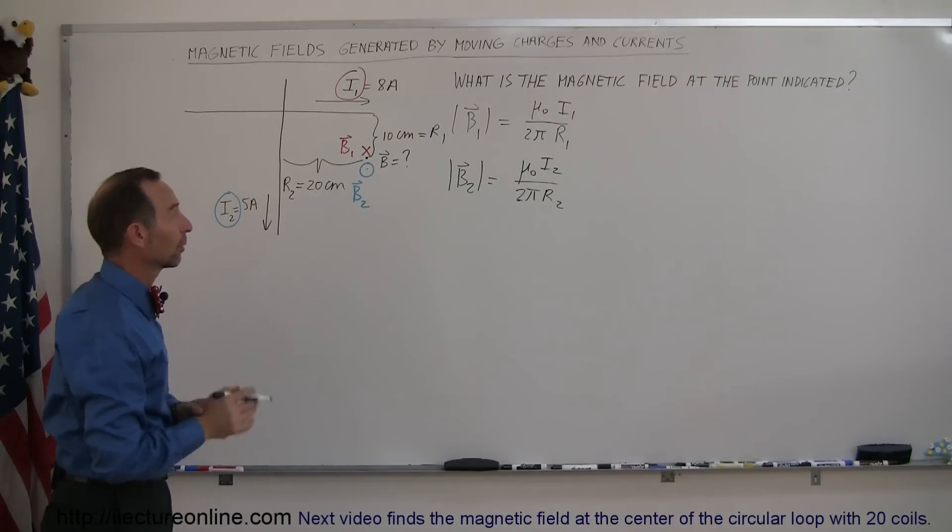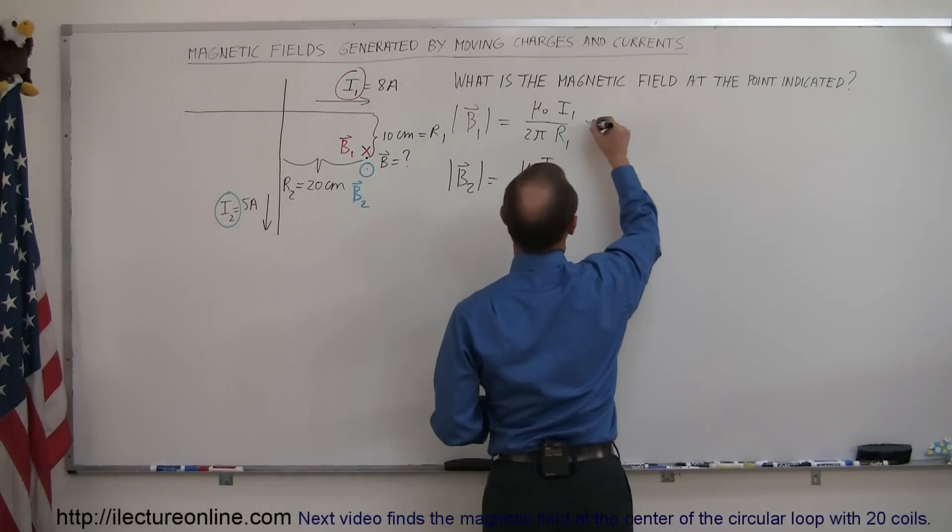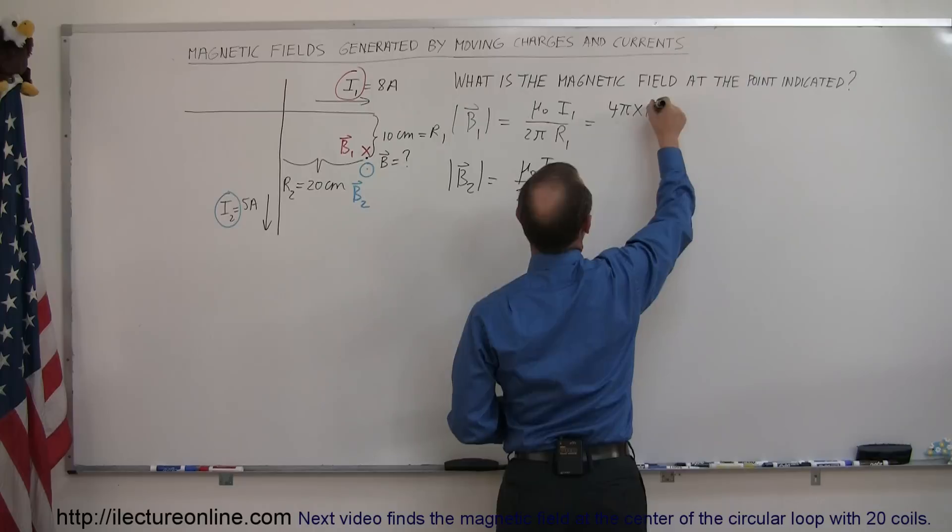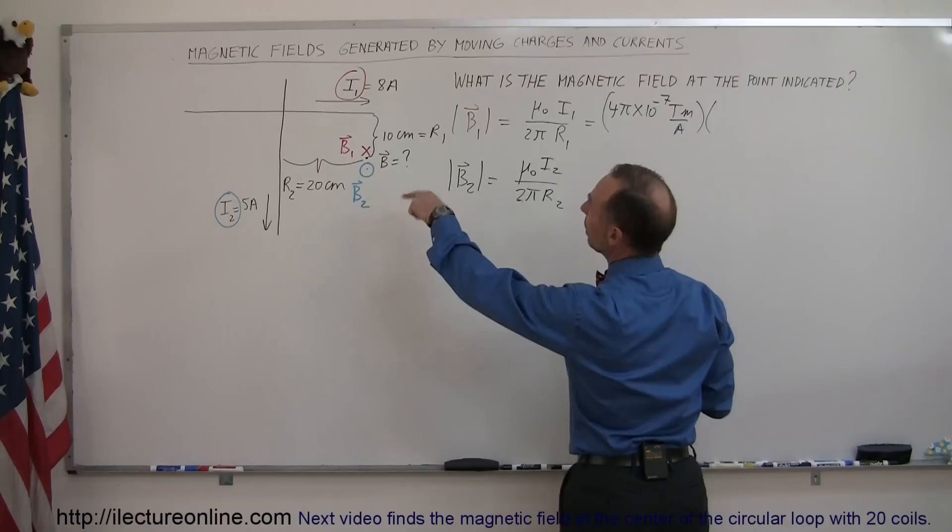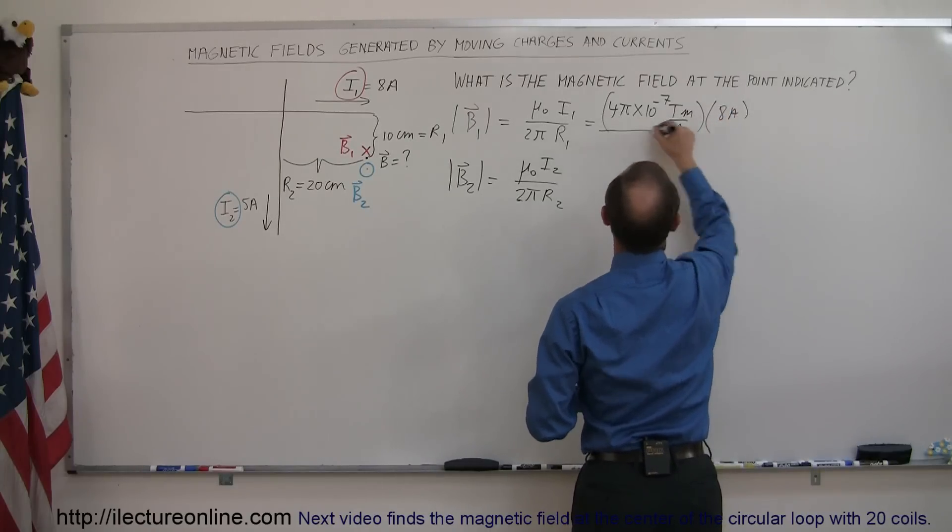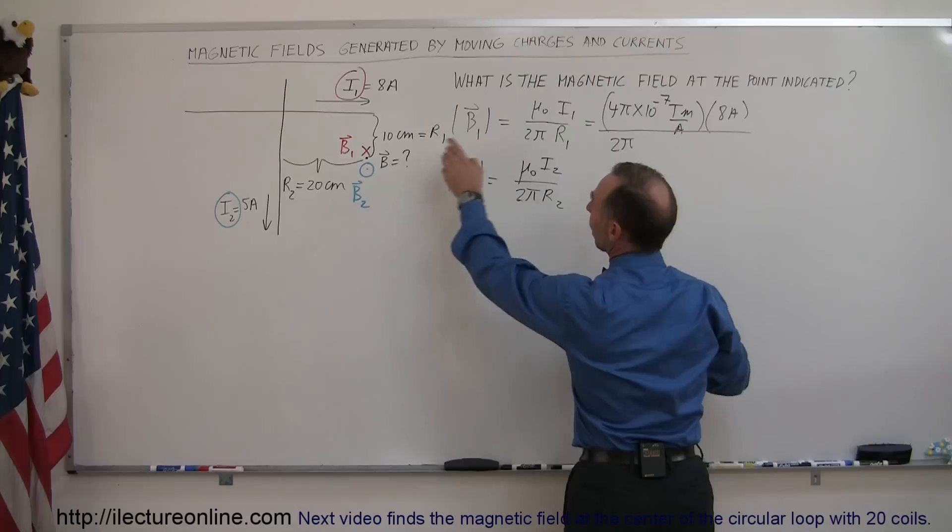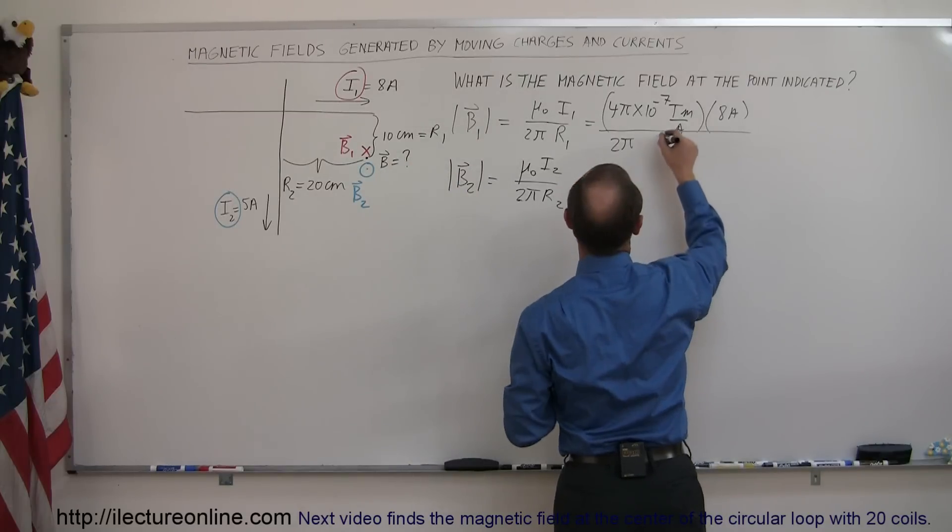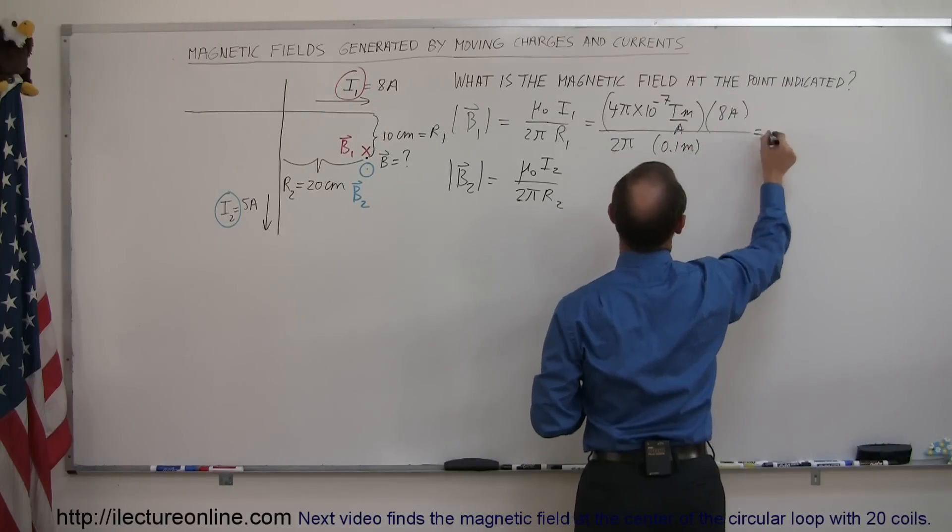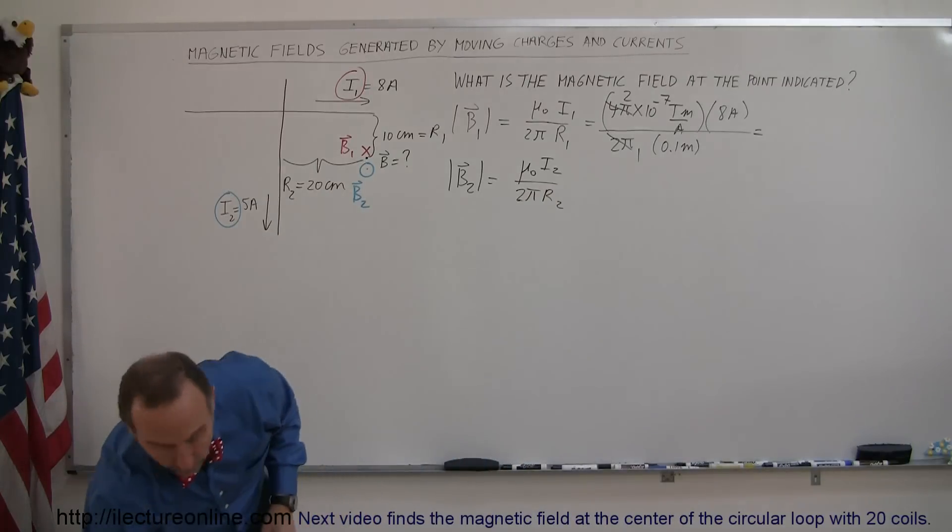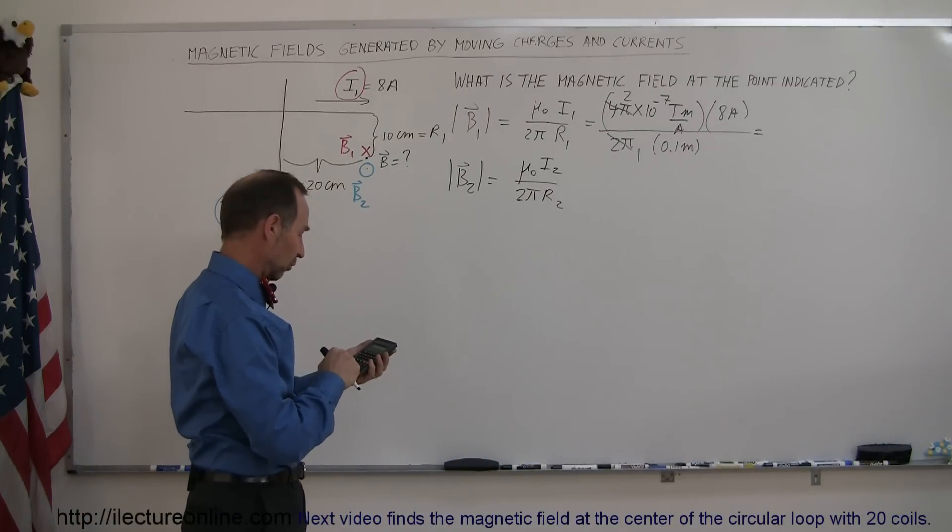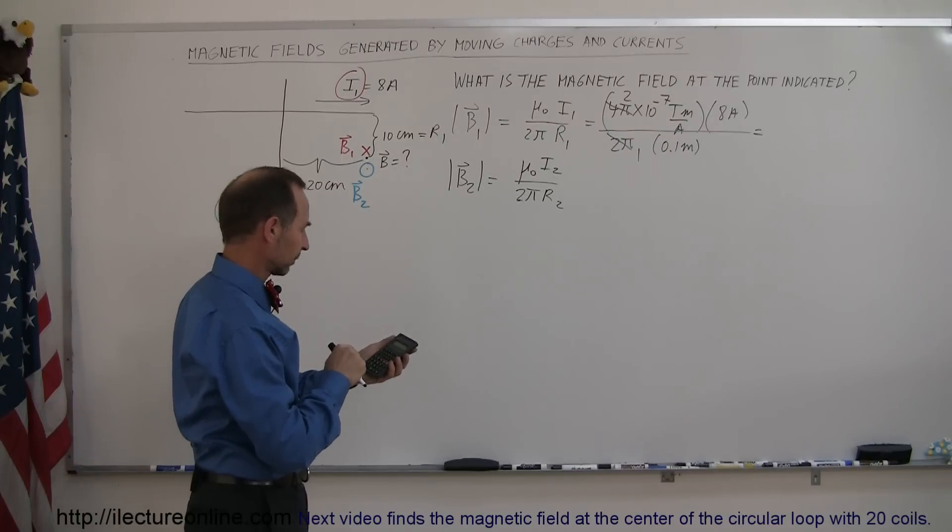And now we can go ahead and plug in the numbers and figure out what those are. So this is equal to 4 pi times 10 to the minus 7 teslas meters per amps, multiplied times the current I1 equal to 8 amps, divided by 2 pi times R1. And R1 in this case would be 10 centimeters converted to meters is 0.1 meters. Okay, the 4 pi and the 2 pi cancel, this becomes 1, this becomes 2. Using a calculator, what do we get for the first value? So it's 2e to the 7th minus times 8 divided by 0.1.